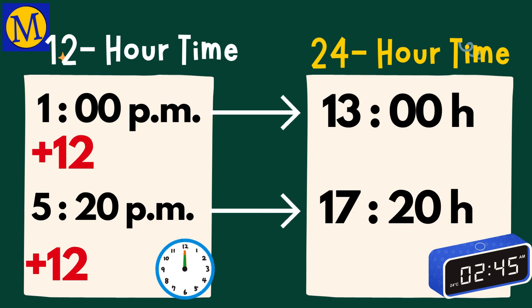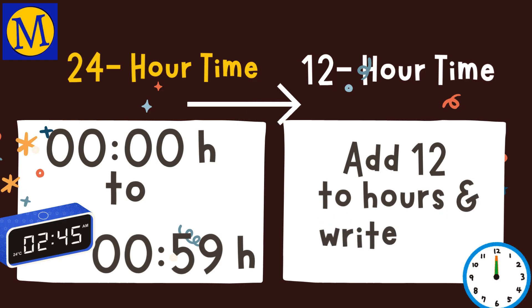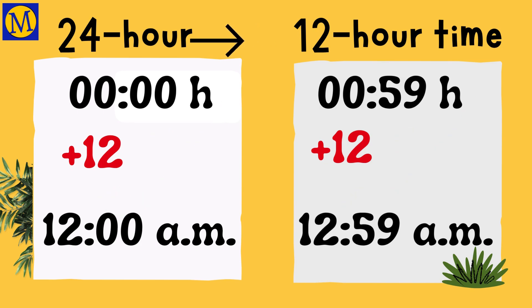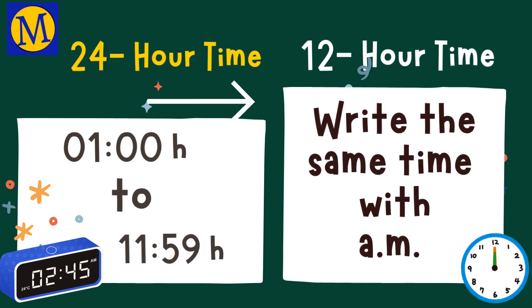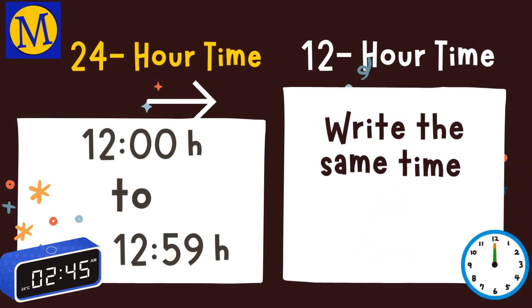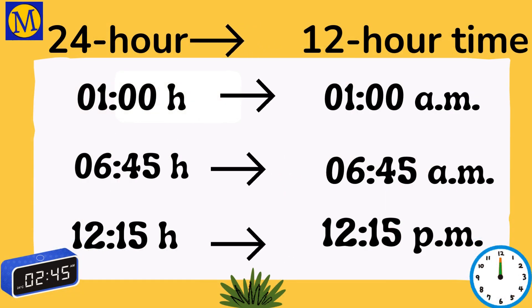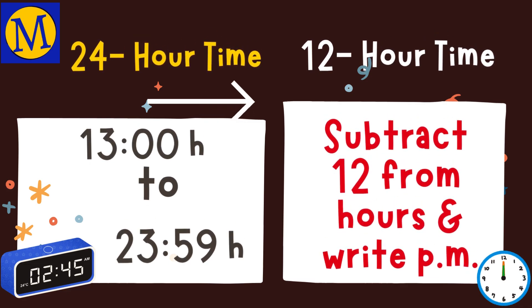Now let's convert 24-hour time to 12-hour time. The time from 0:00 to 0:59 hours is changed to 12-hour time by adding 12 to the hours and writing a.m. The time from 100H to 11:59H is changed to 12-hour time by writing it as it is with a.m. The time from 1200H to 1259H is written as it is with p.m. The time from 1300H to 2359H is changed to 12-hour time by subtracting 12 from the hours and using p.m.